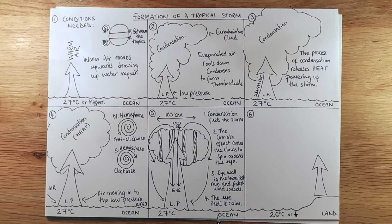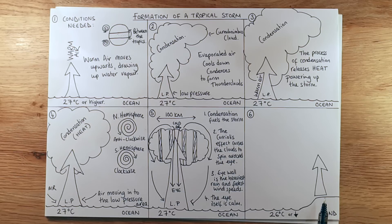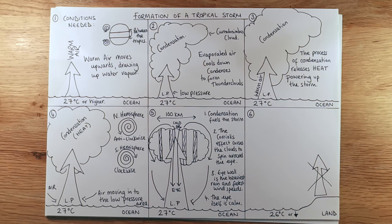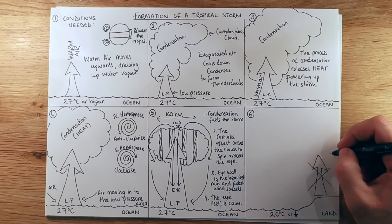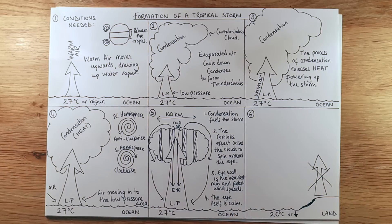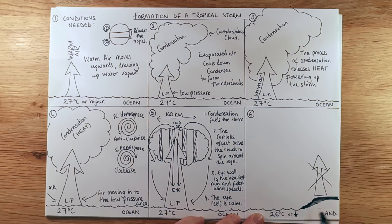Once the hurricane reaches land, two things happen. First, its energy supply is cut off — no more warm, moist air full of water vapour. Second, there's friction with the land — houses, tarmac — which naturally slows it down. The storm's energy, which comes from condensation heat and warm sea air, is cut off.